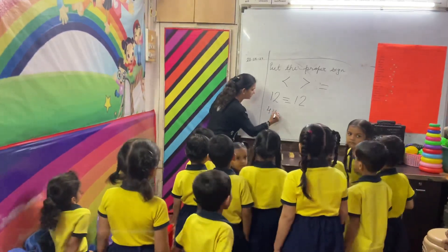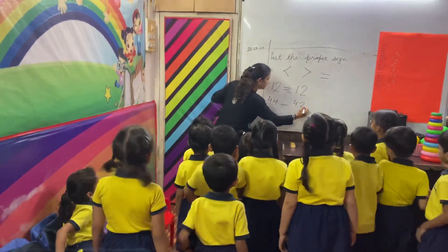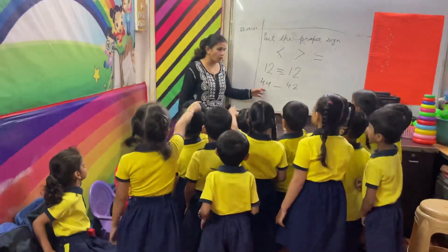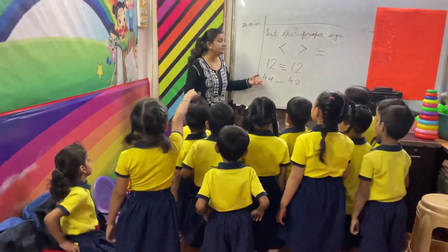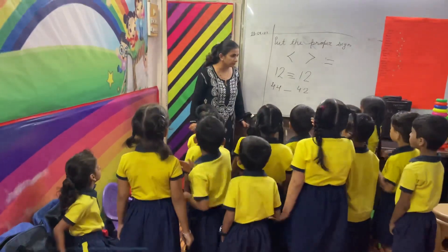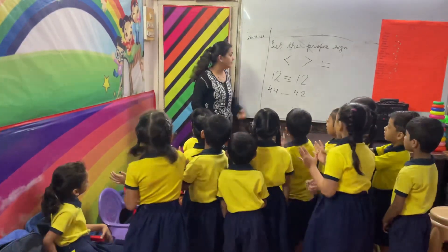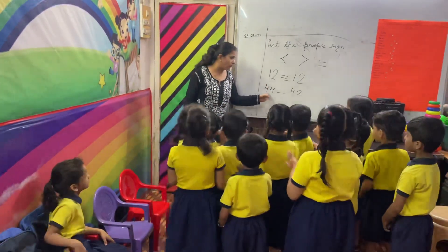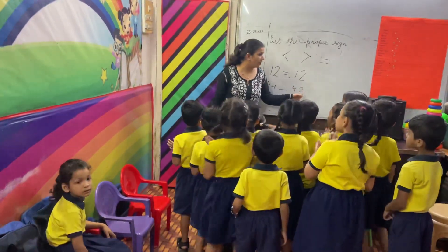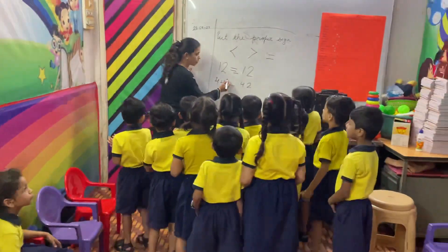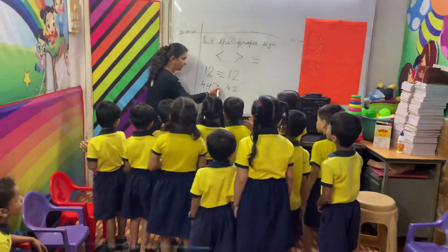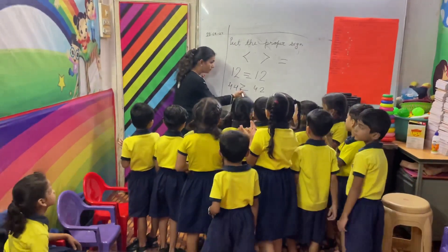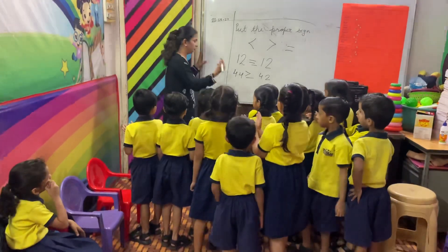Now I am writing 44 dash 42. Which sign will come? Bigger or smaller? Bigger. Why will the bigger sign come? Because 44 is bigger than 42. So we will open the face toward 44, the sign will face that way. Right?